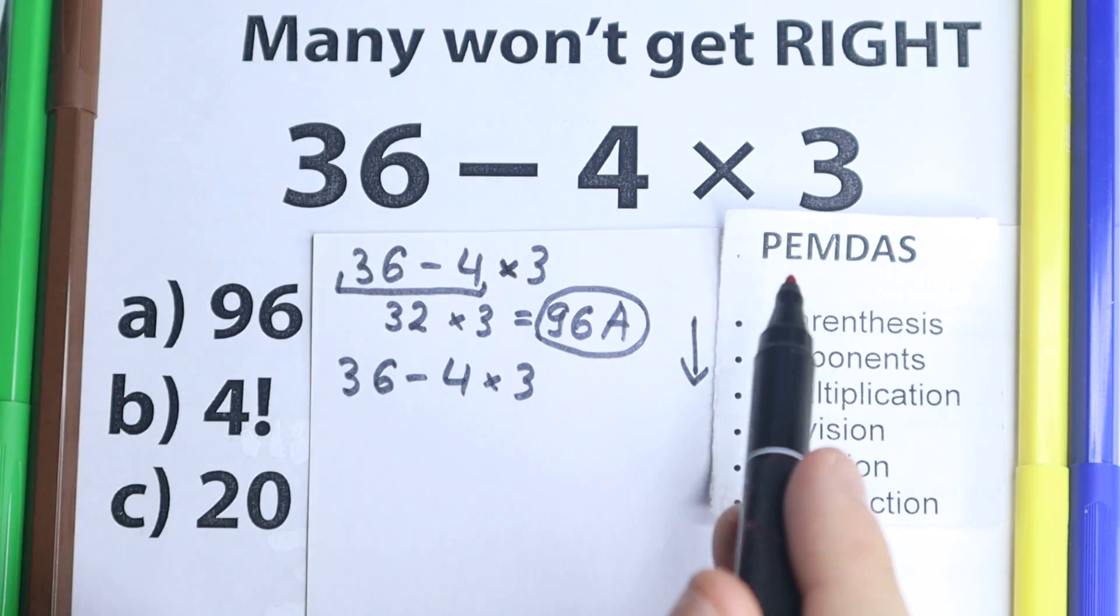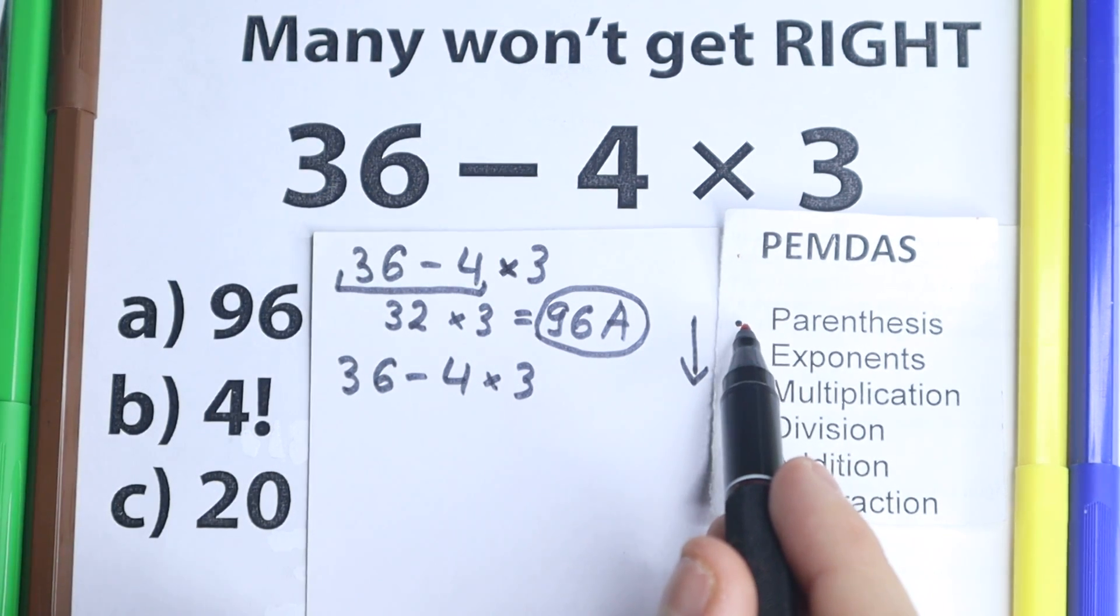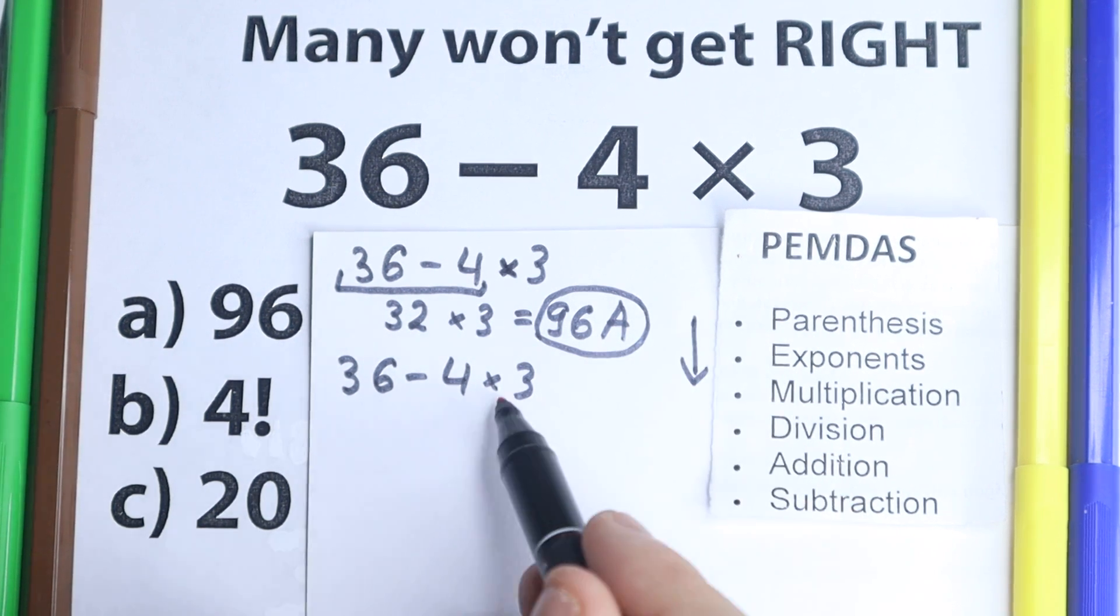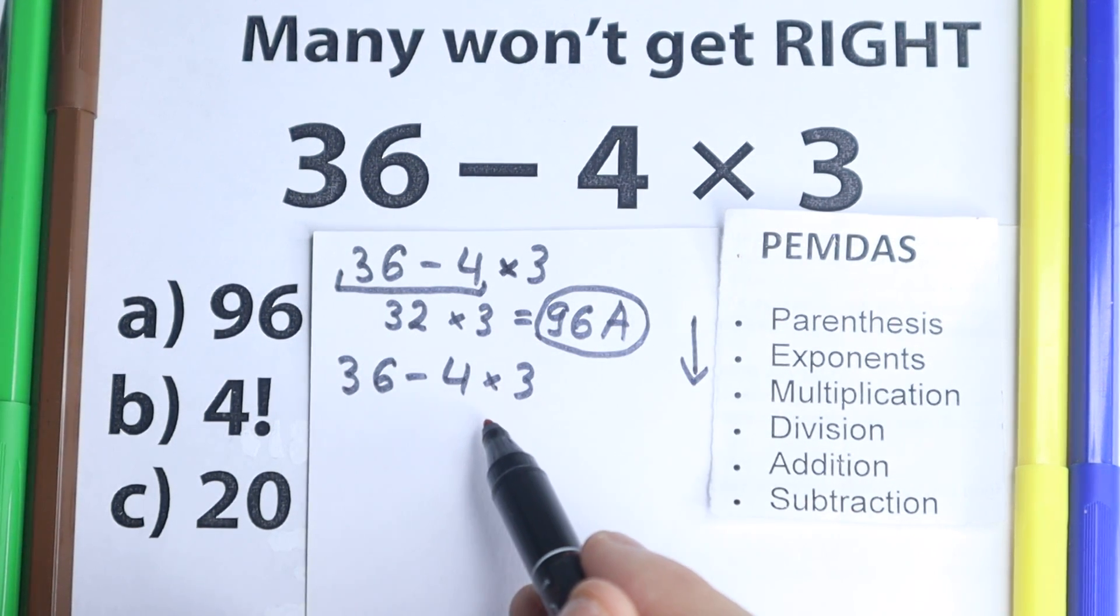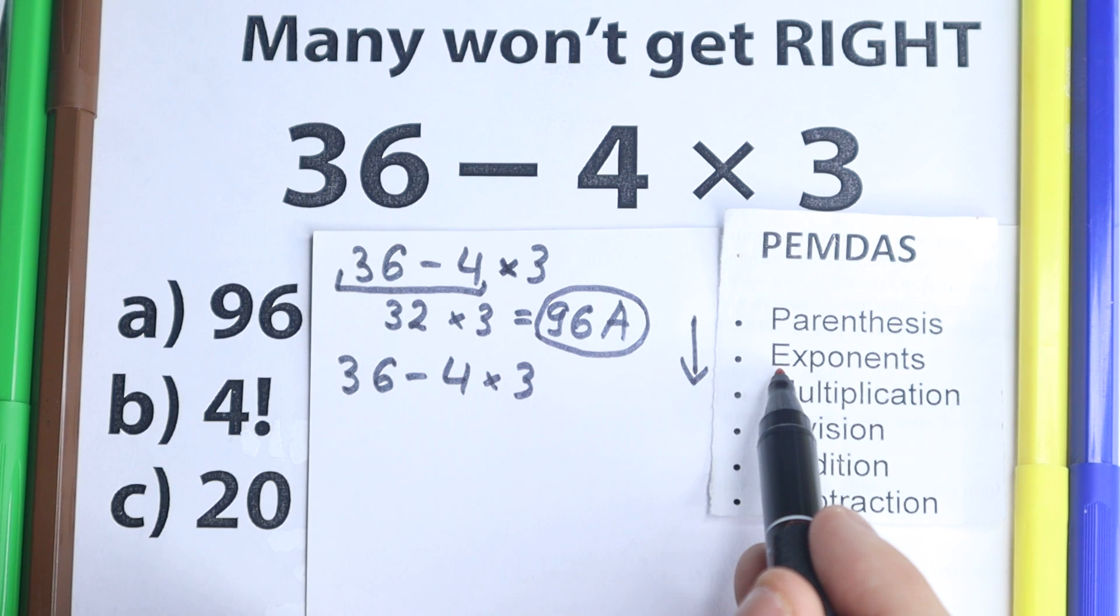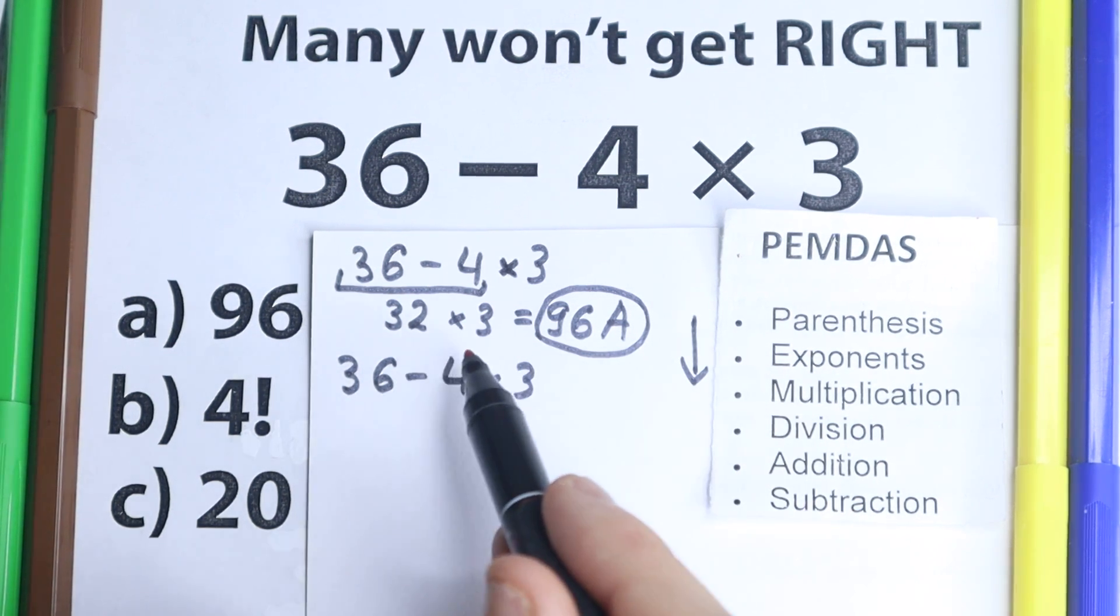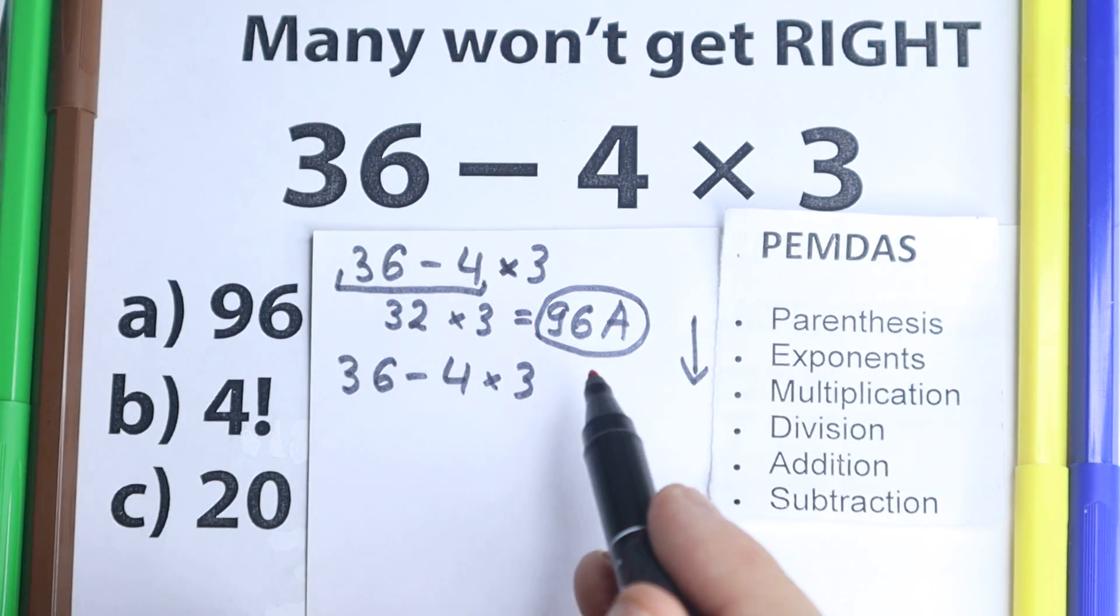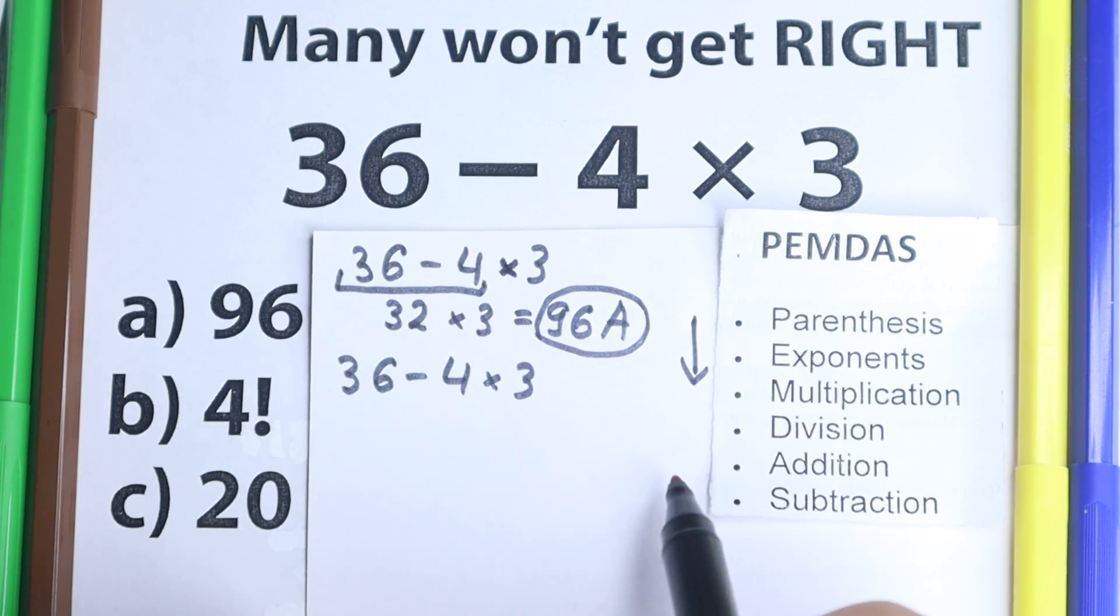We have a lot of steps. First one is parentheses, are there any parentheses right here? No, I don't see any of those, so we just go to the next step. What about exponents? Are there any exponents right here? Squares, cubes, fourth power, sixth power? No, I don't see any of those, so we just skip these two parts, which is really great.